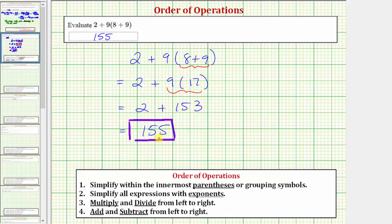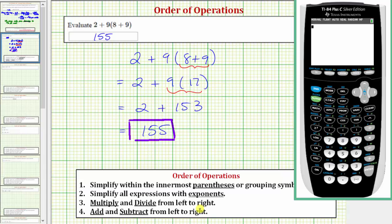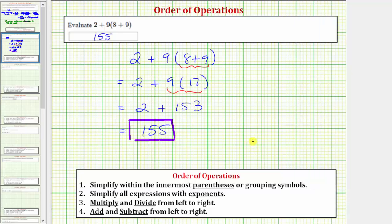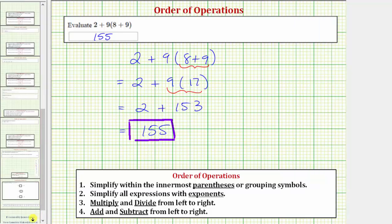Let's verify this result on the calculator. We'll enter the expression just as it's given in this form here. So we have two plus nine, open parenthesis, eight plus nine, close parenthesis, and enter. Notice how we get the same result. The given expression simplifies to 155. I hope you found this helpful.